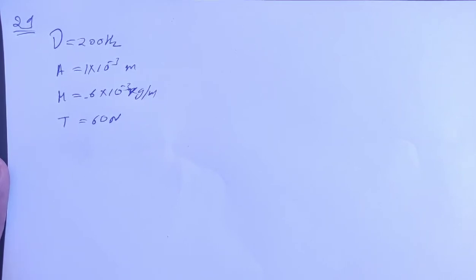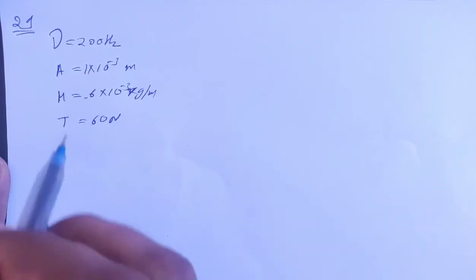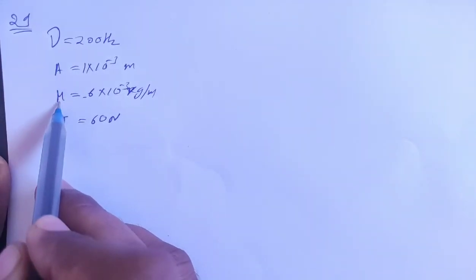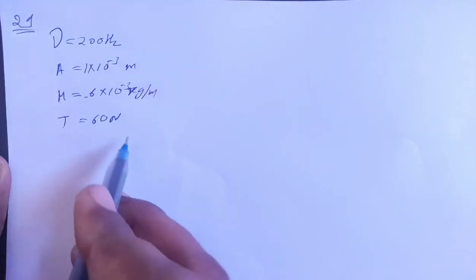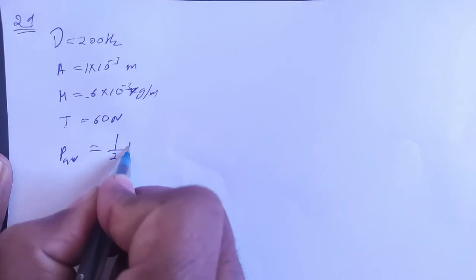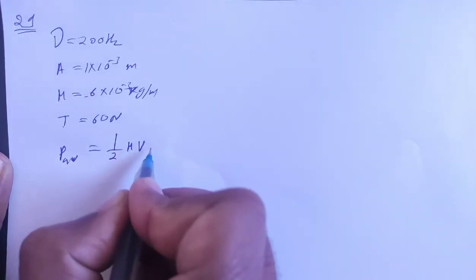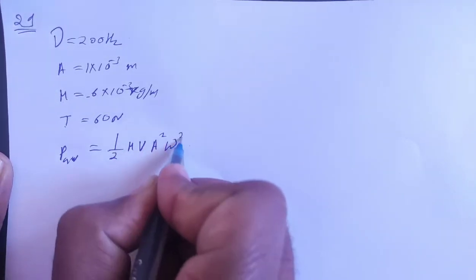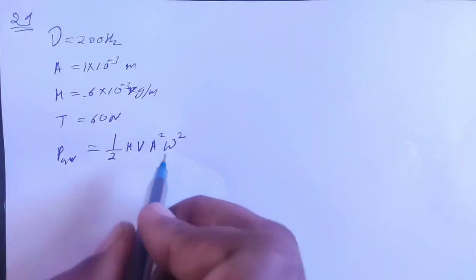Given: frequency and amplitude, mass per unit length, tension. The formula for average power is 1/2 times mass per unit length times speed times amplitude squared times angular speed squared.